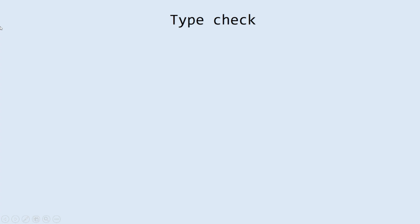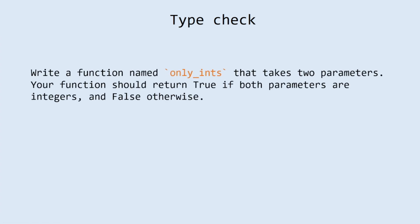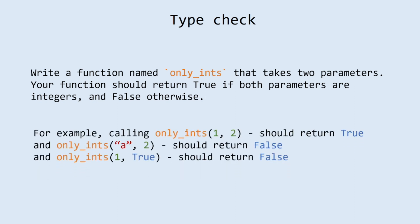Next task is type check. Explanation: write a function named only_ints that takes two parameters. Your function should return true if both parameters are integers, and false otherwise. For example, calling only_ints with 1 and 2 should return true, only_ints with a string and 2 should return false, and only_ints with 1 and a boolean value should return false.